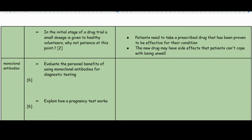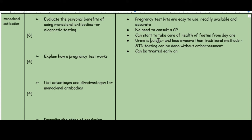Moving on to monoclonal antibodies — this topic comes up every single year. First question: evaluate the personal benefits of using monoclonal antibodies for diagnostic testing. Monoclonal antibody testing kits can be used for pregnancy test kits — they are easy to use, readily available, there's no need to consult a GP, and GPs can focus on other diseases. You can start caring for the fetus from an early stage. Testing using urine is quicker and less invasive than traditional methods. STI testing with monoclonal antibodies can also be done without embarrassment and treated early on.